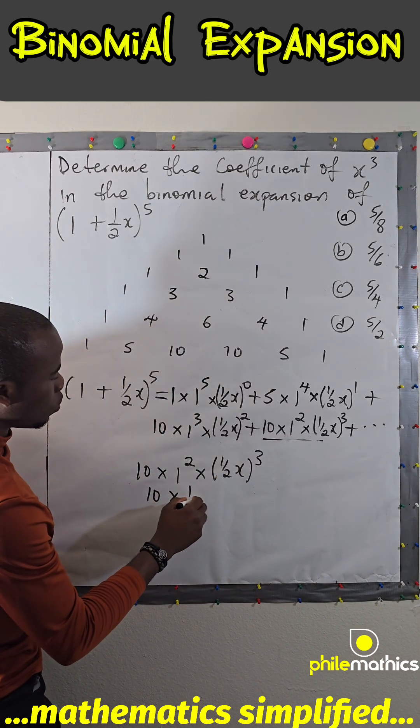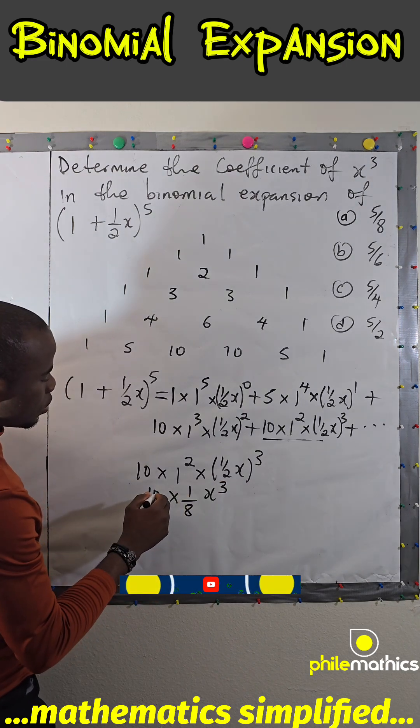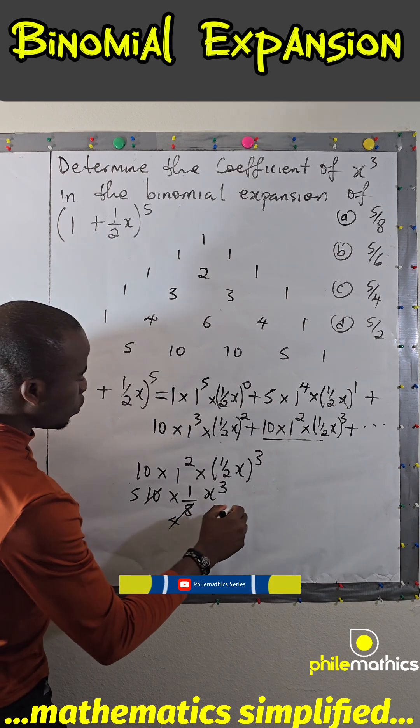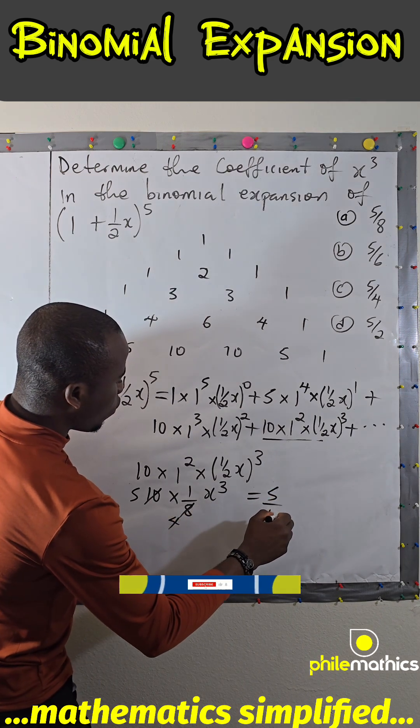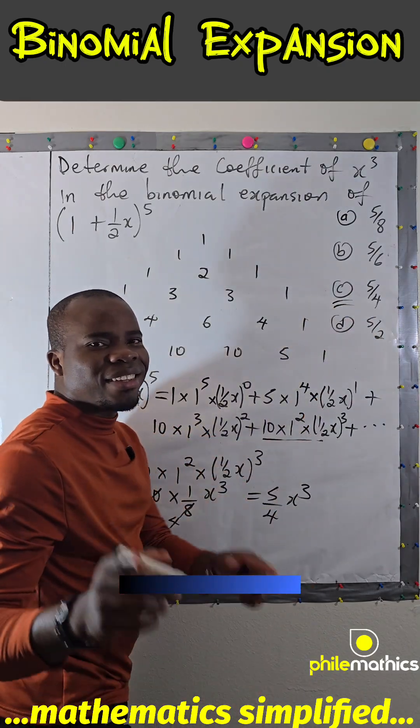And 10 divided by 8 is 5/4 times x cubed, which is C. Thank you for watching.